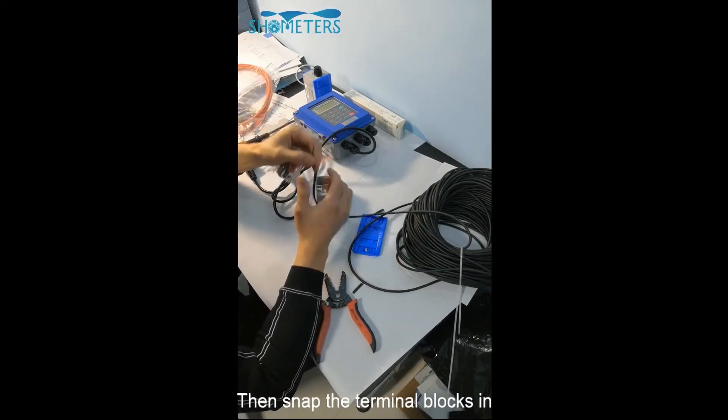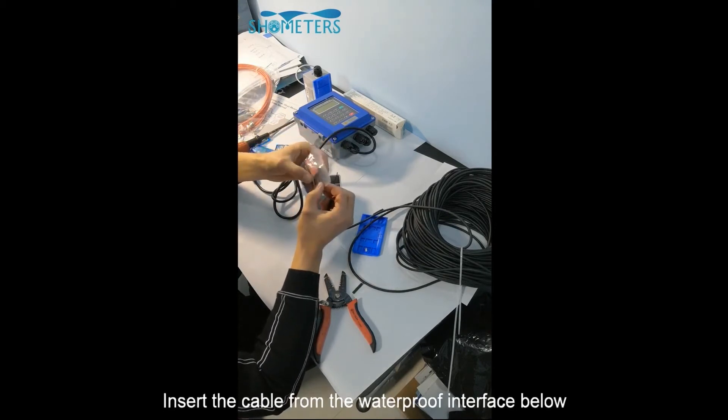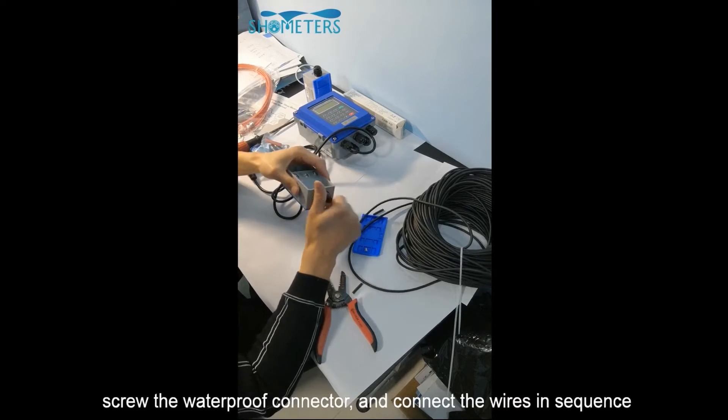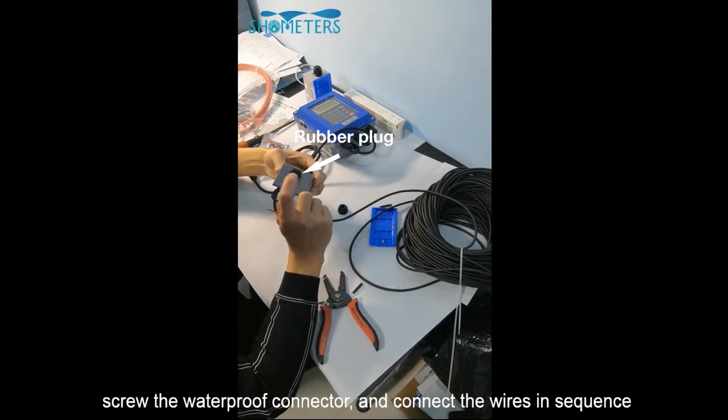Then snap the terminal block in. Insert the cable from the waterproof interface below. Screw the waterproof connector and connect the wires in sequence.